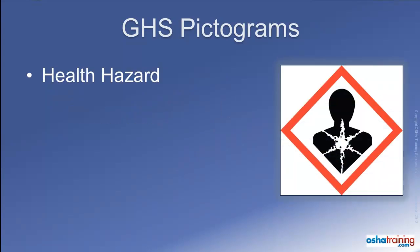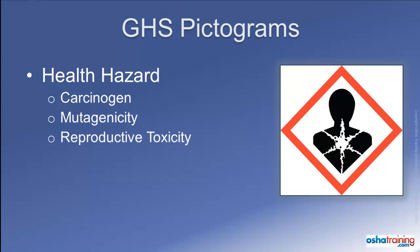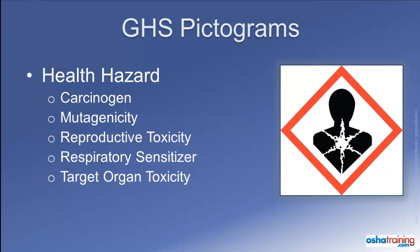The health hazard pictogram identifies toxic chemicals and products that can cause health problems over a long period of time, such as carcinogens, which can lead to cancer; mutagens, which can cause alterations in your DNA and affect your offspring; reproductive hazards, which could affect the ability of men and women to have healthy children; respiratory sensitizers, which could cause an allergic reaction even at low levels after an initial overexposure; chemicals that can cause damage to or affect the function of certain organs; and aspiration toxicity hazards, which could lead to the development of chemical pneumonia.